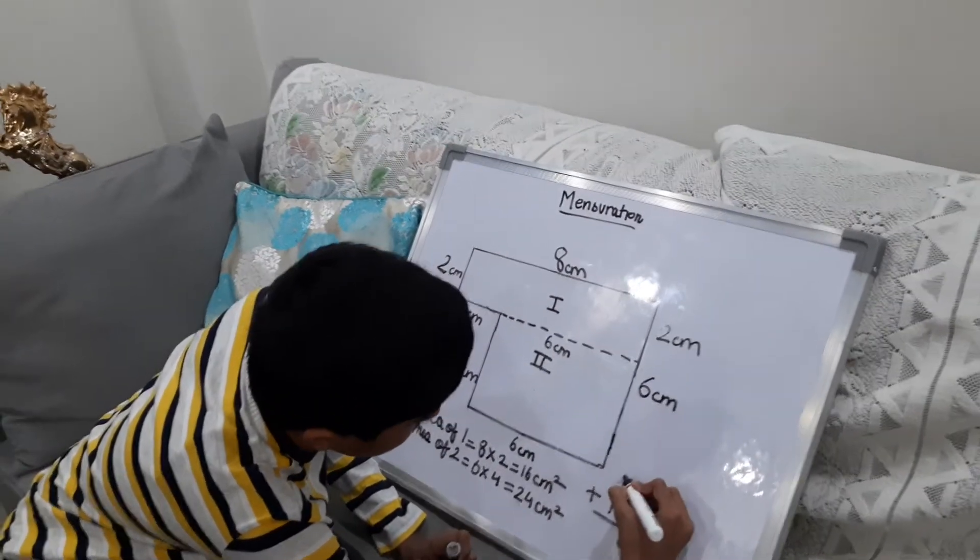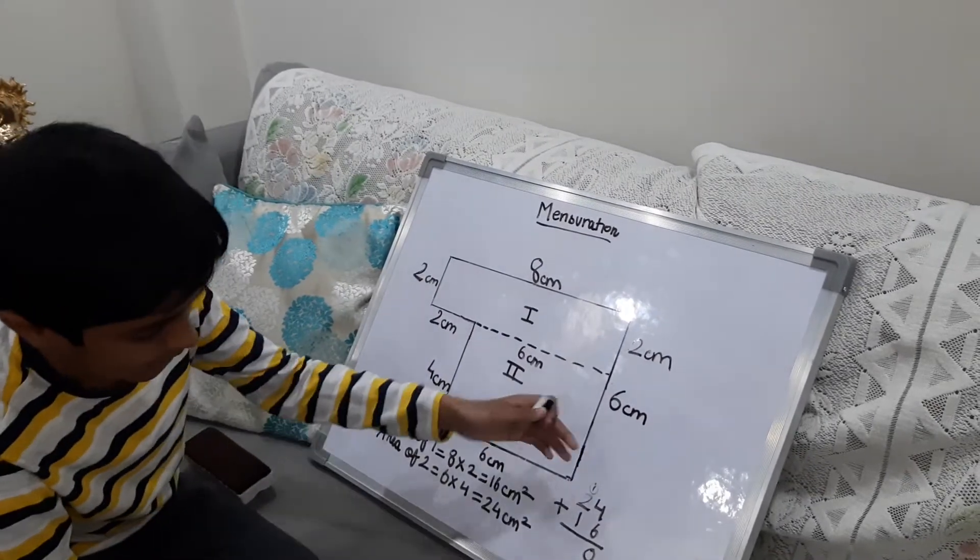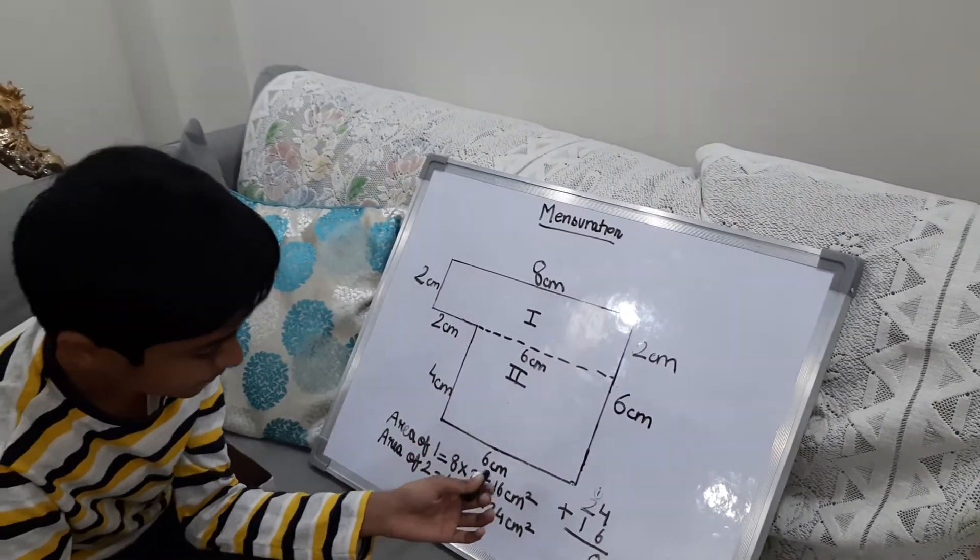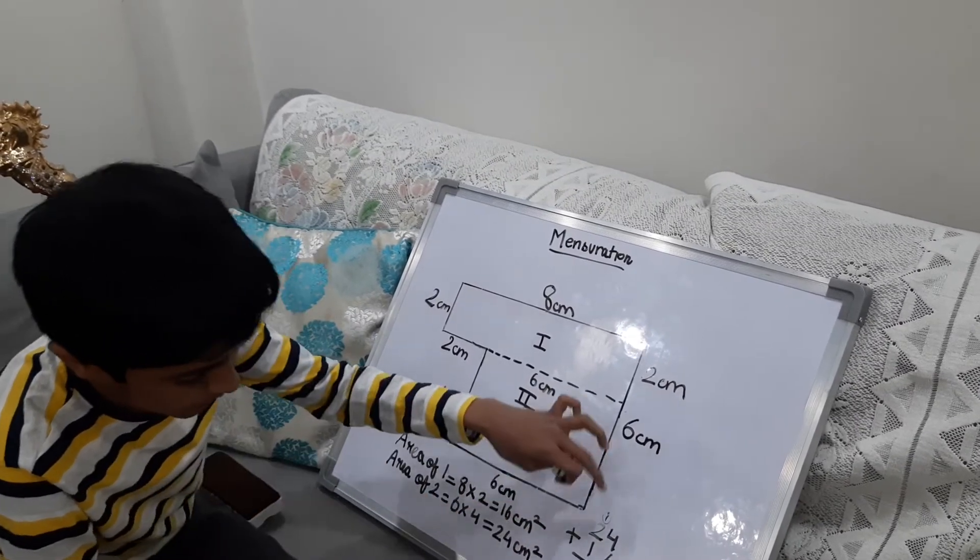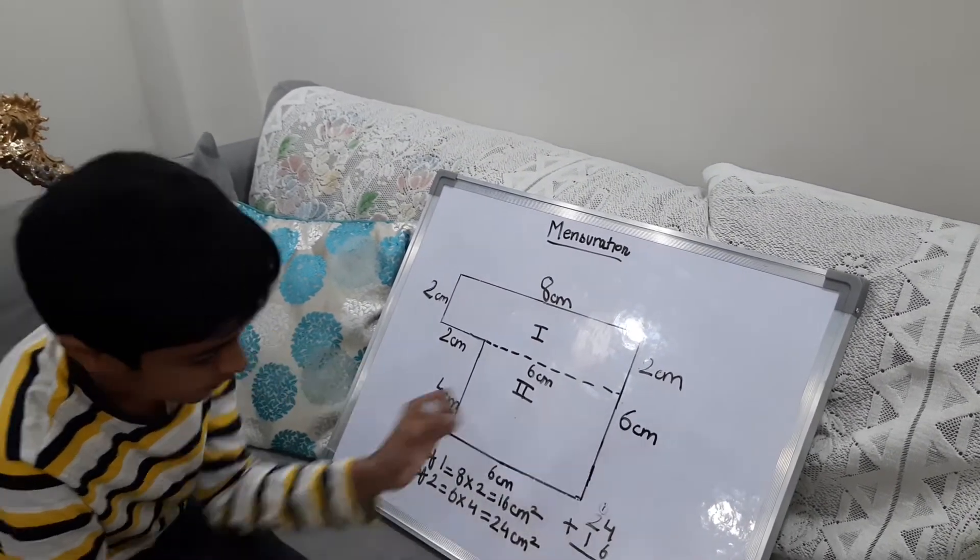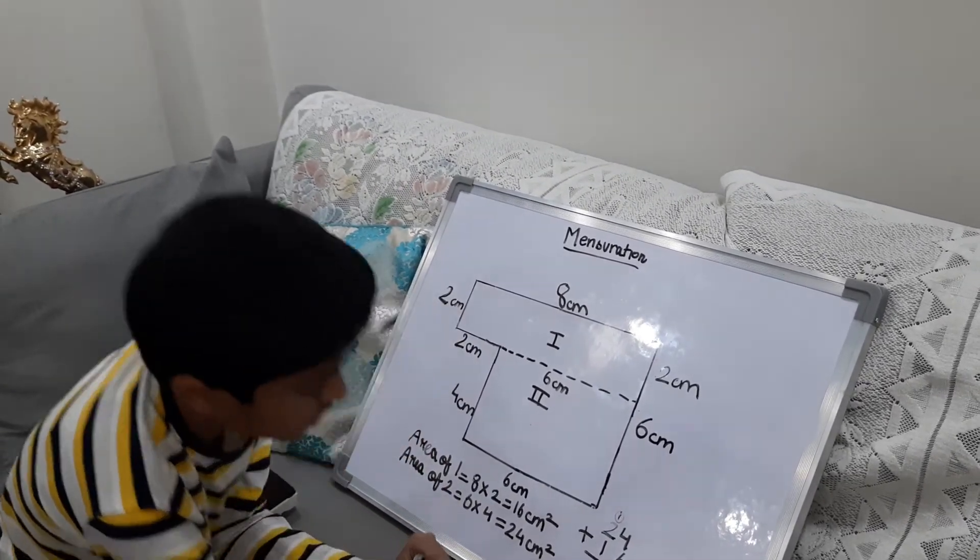The 1 will go up here. 1 plus 2 is 3. We have another one, so it will be 4. So the number is 40 cm square.